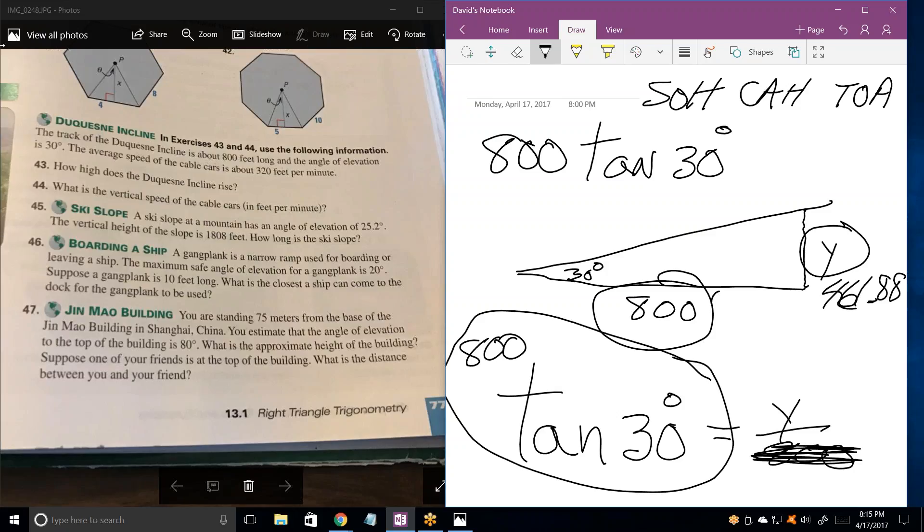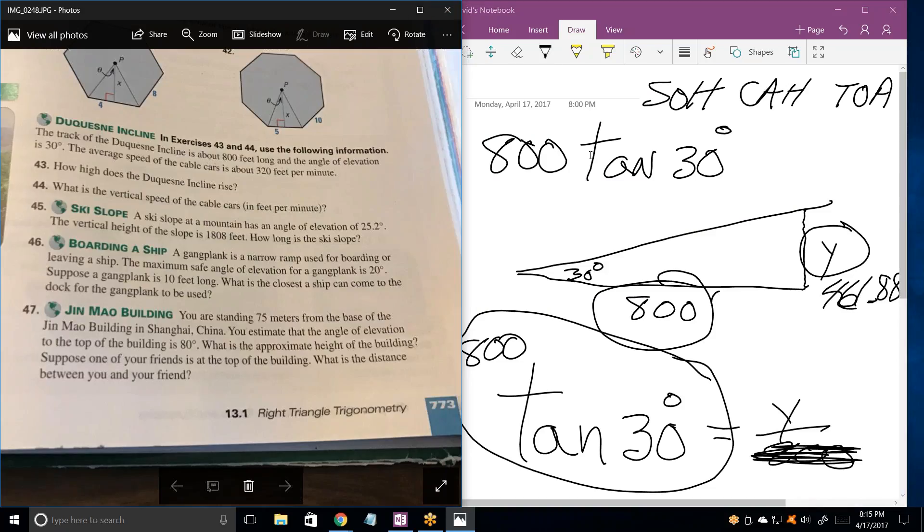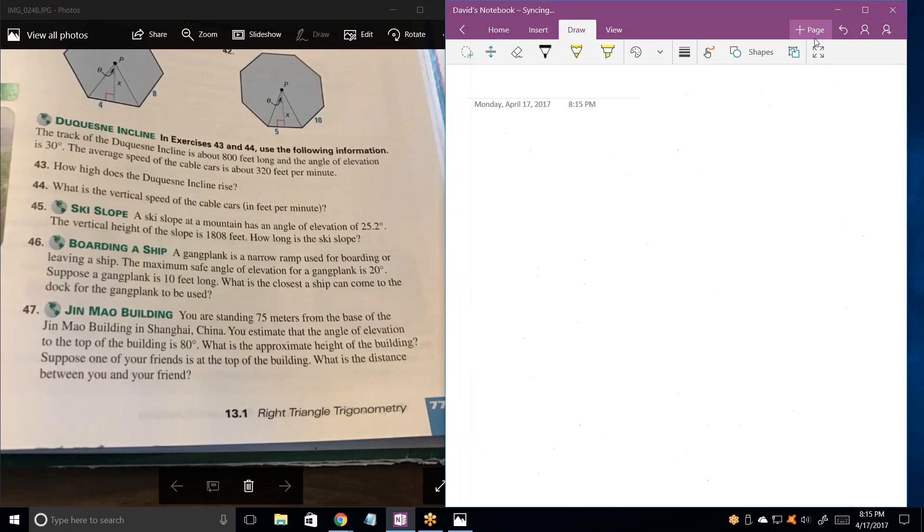After 43, it is 45 through 51. We got a ski slope. As an angle of elevation of 25 degrees. That has to be that angle right there, 25.2 degrees. Could only be this angle or this angle, and that's never an angle of elevation. It's always measured from the horizon or from the level. And the vertical height of the slope is 1808.